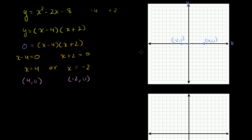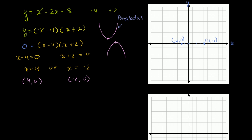Now we're going to determine something called the vertex of our parabola. Parabolas are the graphs of quadratic functions, and the graph looks either like an upward u or a downward u. The vertex is either the minimum point or the maximum point. To figure out the vertex, you take the x-value that's halfway between the two intercepts — the intercepts are always equidistant from the vertex.